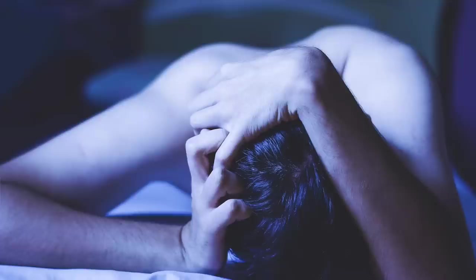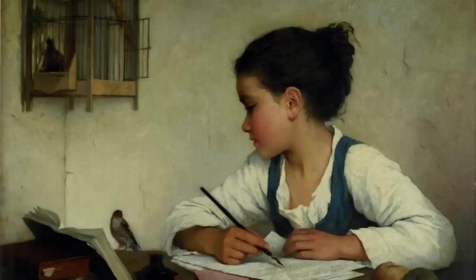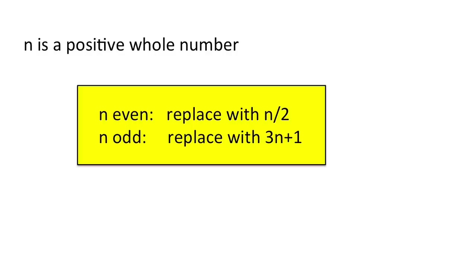There's one problem, however, which leaves mathematicians utterly defeated, and it only involves simple arithmetic that a seven-year-old can follow. This is definitely the simplest impossible problem. Starting with a positive whole number n, let's produce a new number according to the following rule.